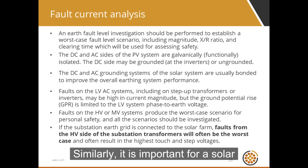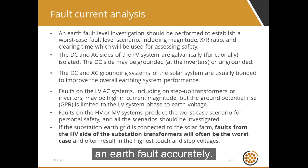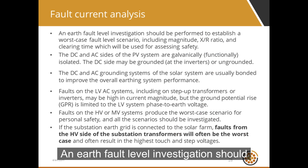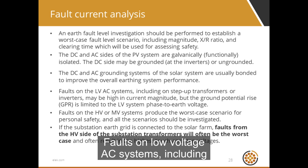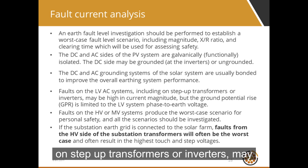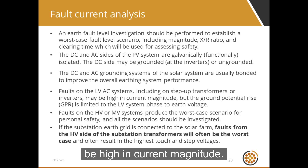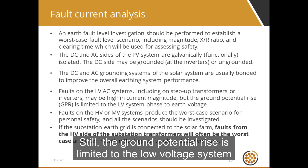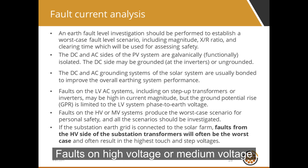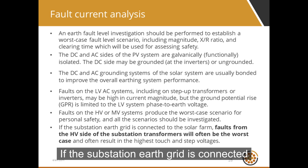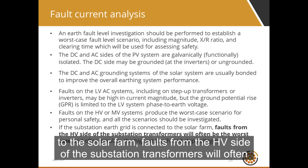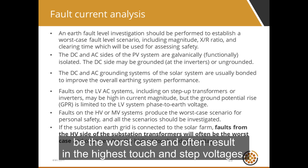Similarly, it is important for a solar farm to determine the fault currents during an earth fault accurately. An earth fault level investigation should be performed to establish a worst-case fault level scenario. Faults on low-voltage AC systems, including on step-up transformers or inverters, may be high in current magnitude, though the ground potential rise is limited to the low-voltage system voltage. Faults on high-voltage or medium-voltage systems produce the worst-case scenario for personal safety, and all scenarios should be investigated. If the substation earth grid is connected to the solar farm, faults from the HV side of the substation transformers will often be the worst case, resulting in the highest touch and step voltages.